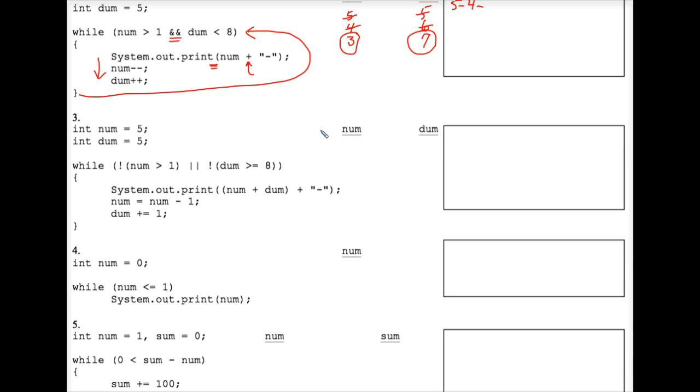Two variables here. Again, 5 and 5. A more complicated control expression. Num greater than 1. Work from inside the parentheses out. 5 is greater than 1, so that's a true. This symbol means not in Java. So the not of a true makes all of this false.